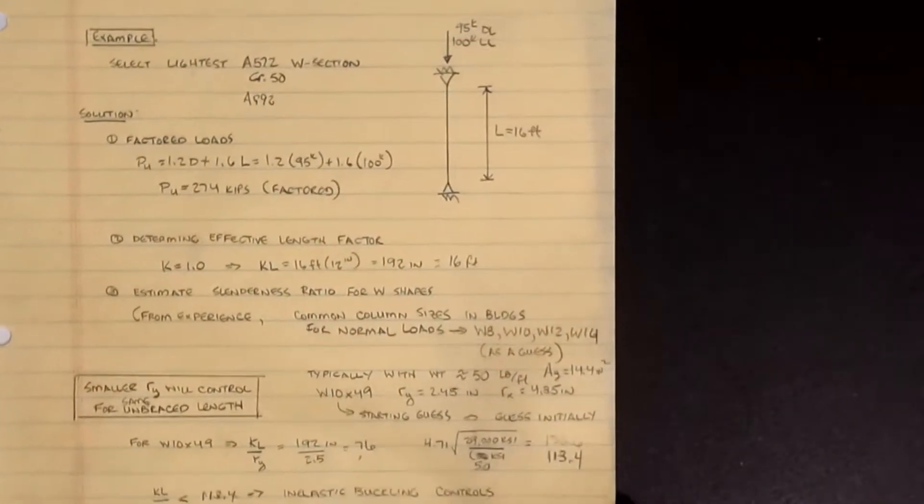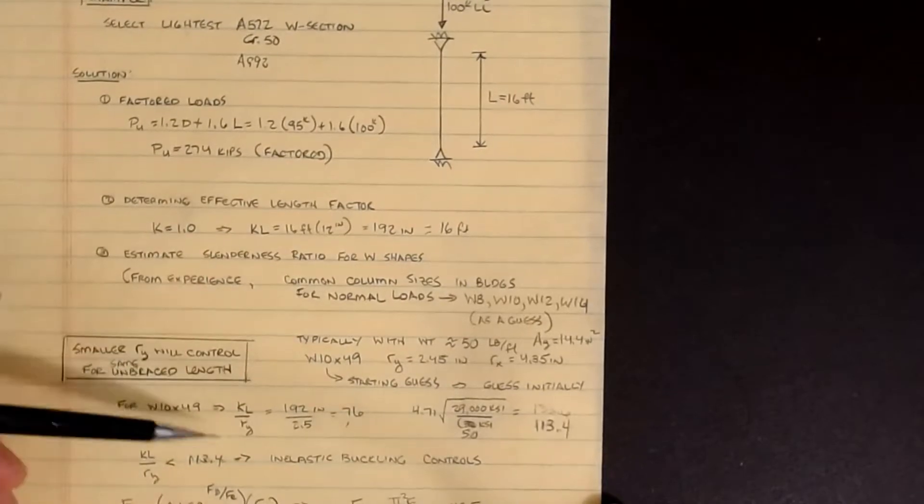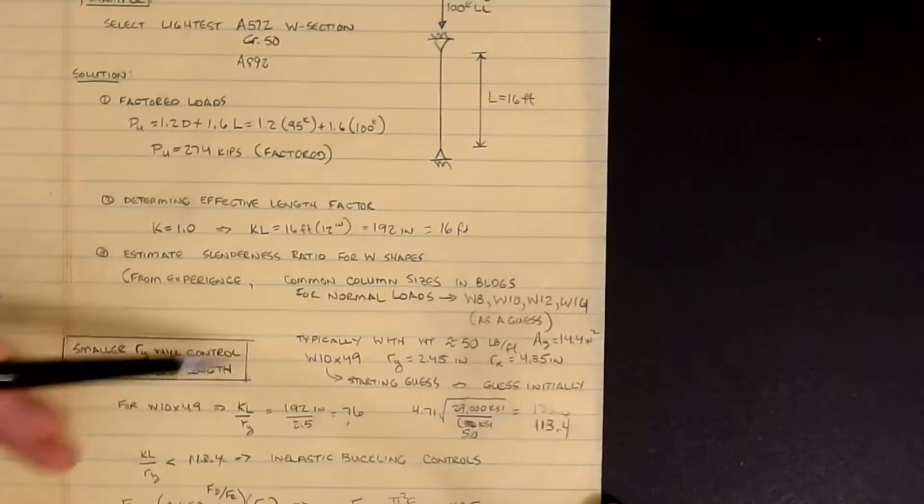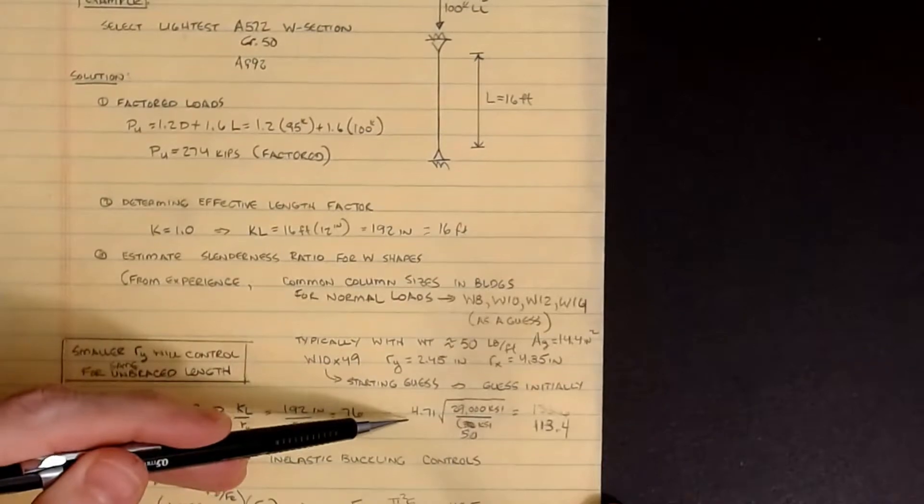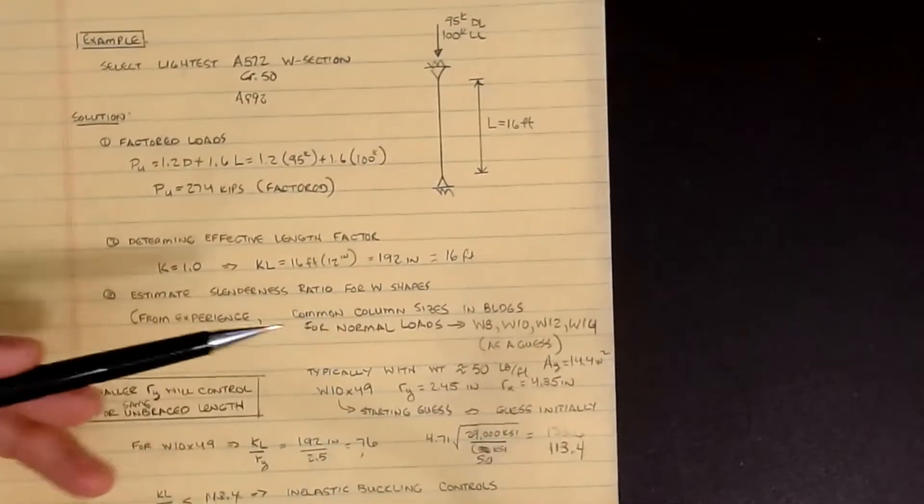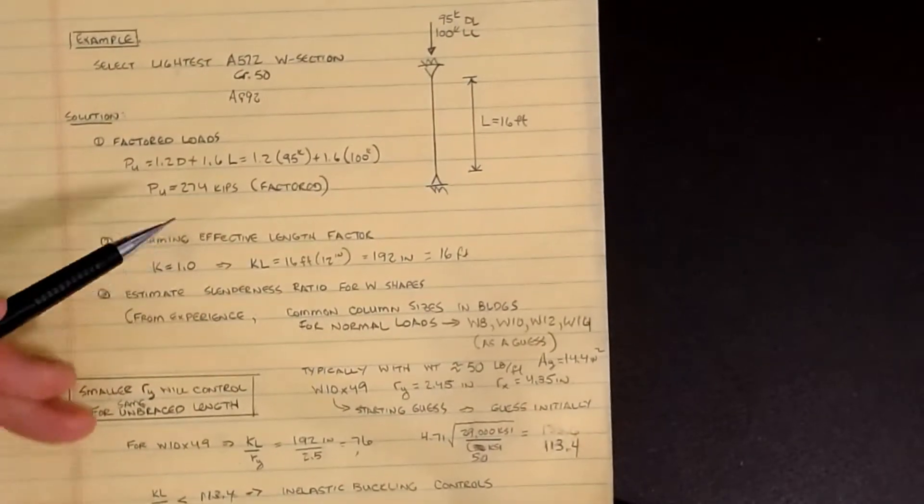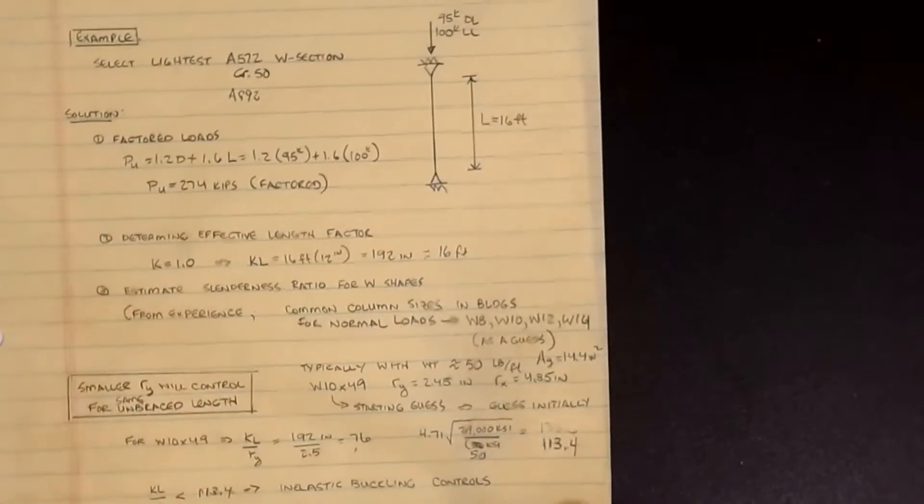Now when you use the equations you have to convert this KL value to inches because you're dividing by KL over R and you need the units to cancel to make the 4.71 square root of E over FY check. If we want a faster way to do this I'll show you that now. We'll keep in mind that I need 274 kips and I need 16 feet as a KL value.